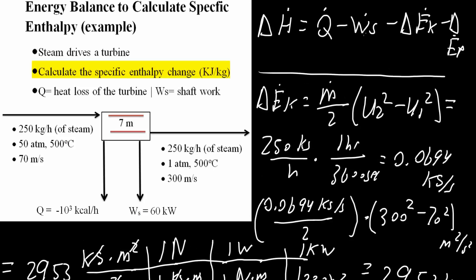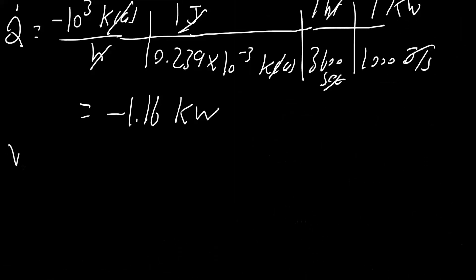Now we will get WS, which is given as 60 kilowatts. The shaft work is 60 kilowatts — which was given — so we don't need to do any conversion.